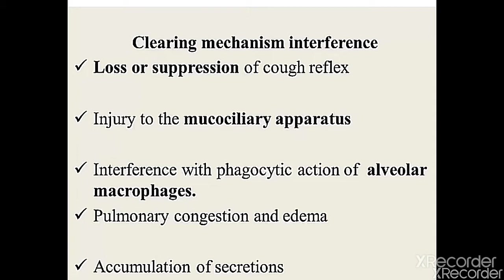Regarding clearing mechanisms: loss or suppression of the cough reflex causes trapped mucus, bacteria, foreign bodies, or toxins to be retained. Injury to the mucociliary apparatus may be acquired or genetic — for example, Kartagener syndrome and cystic fibrosis are genetic causes. In Kartagener syndrome, the cilia are immotile, impairing the mucociliary apparatus. Acquired causes include smoking, other toxins, and alcohol.